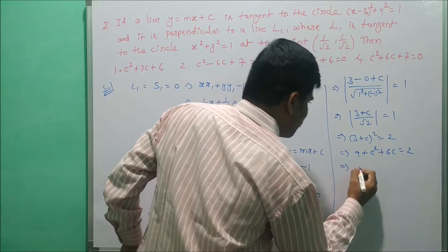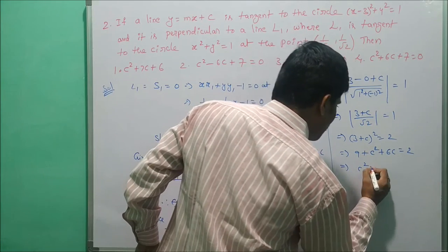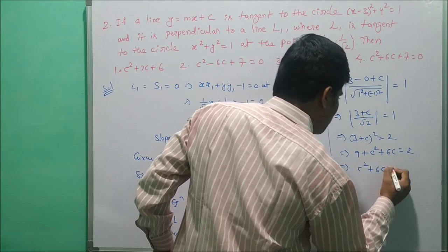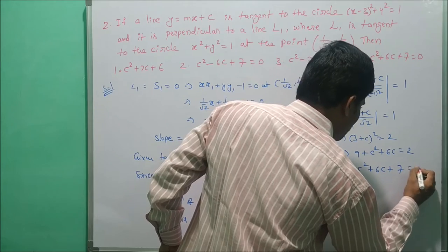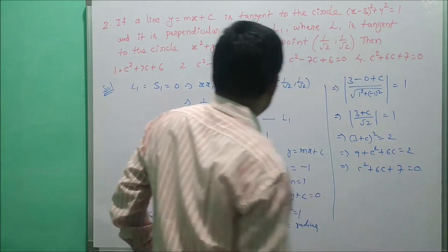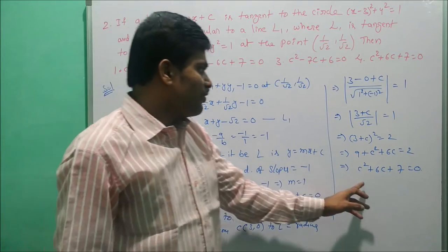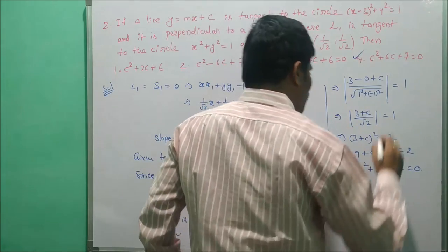Expanding: 9 + c² + 6c = 2, which simplifies to c² + 6c + 7 = 0. This is the solution, which is option 4.